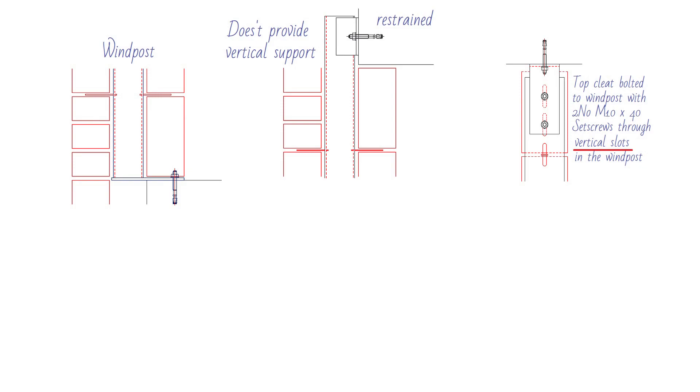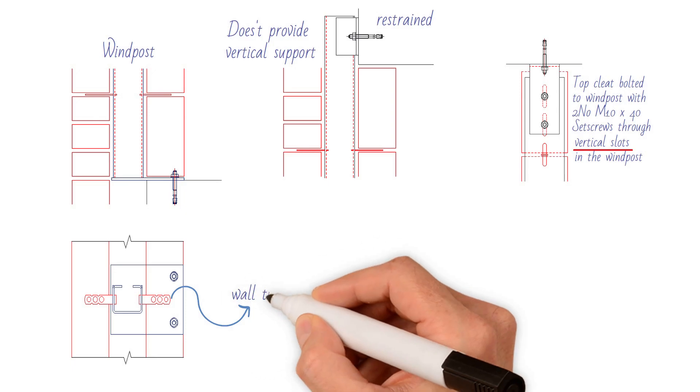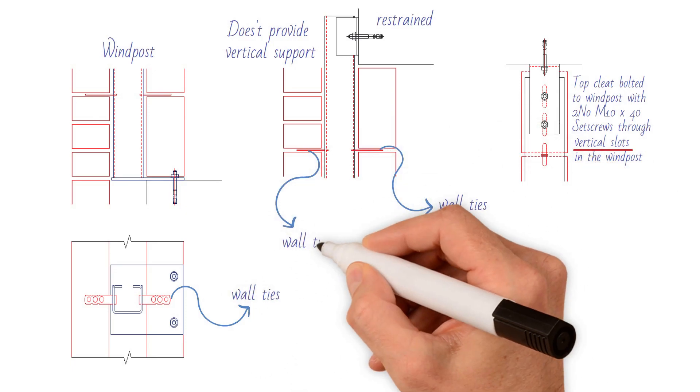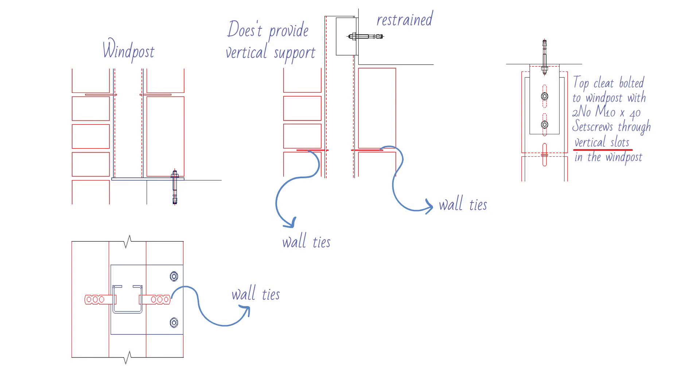Windposts are typically fixed to a wall via a series of wall ties that are placed at every other bed course within the masonry. The ties are post-fixed to the windpost as the wall is constructed to allow for vertical tolerances.